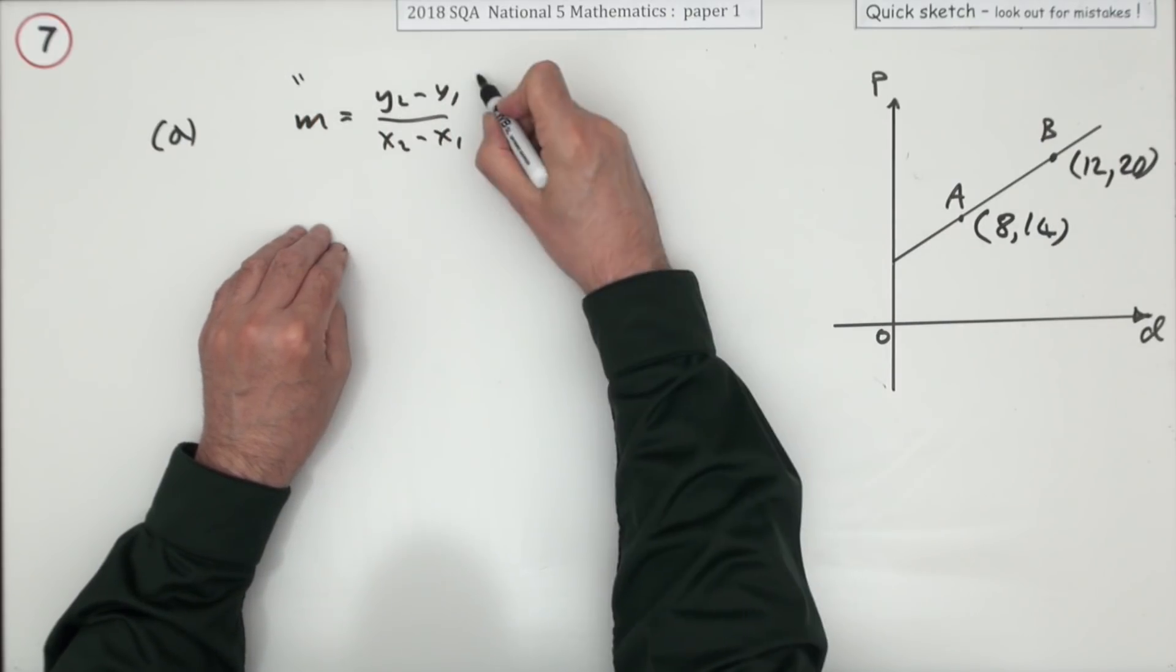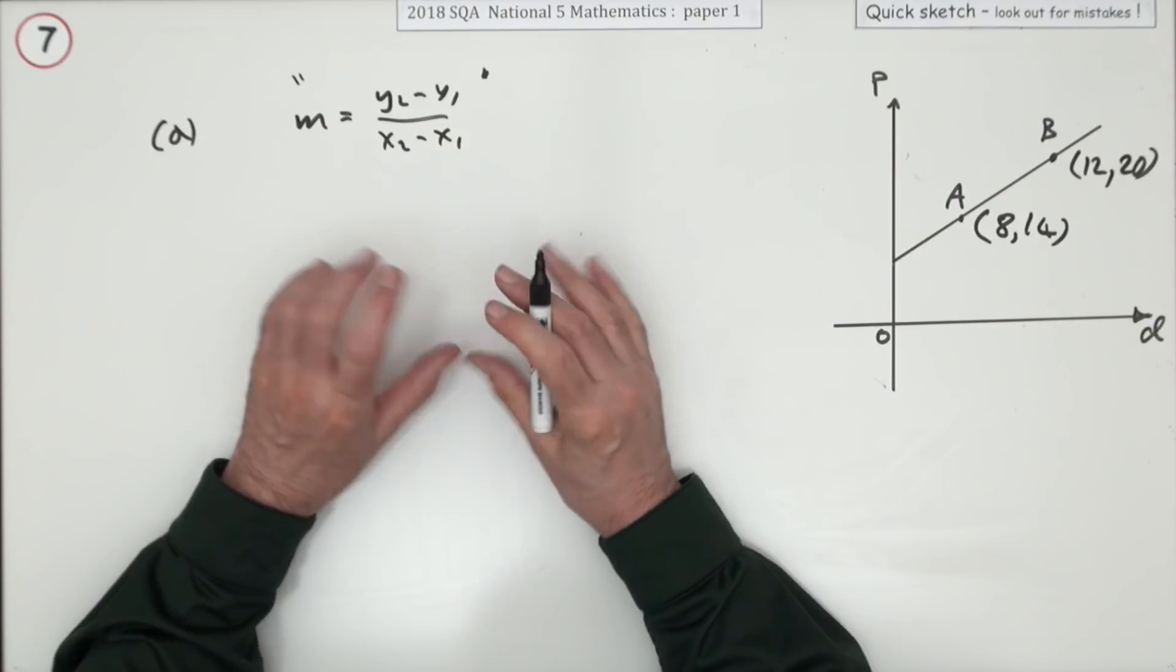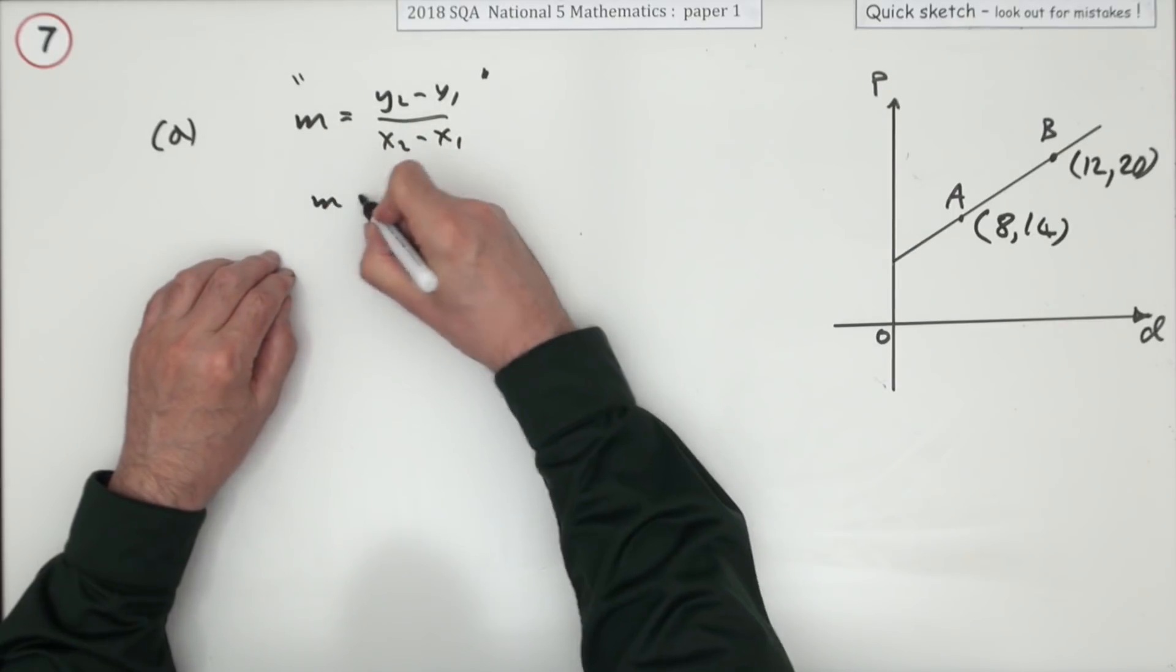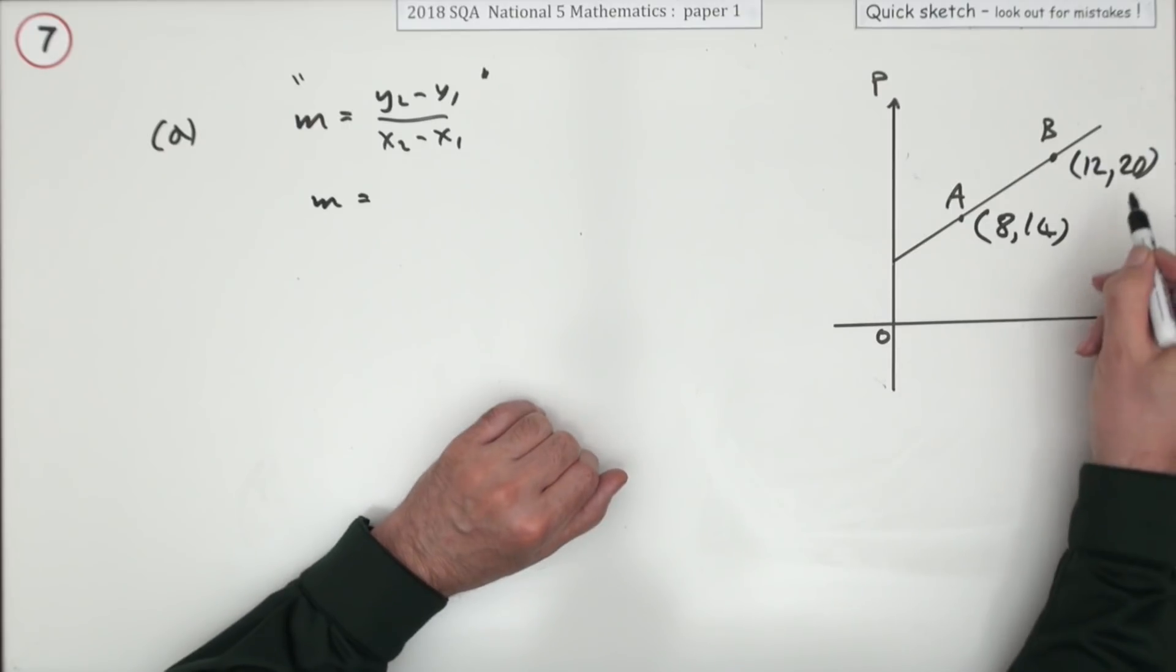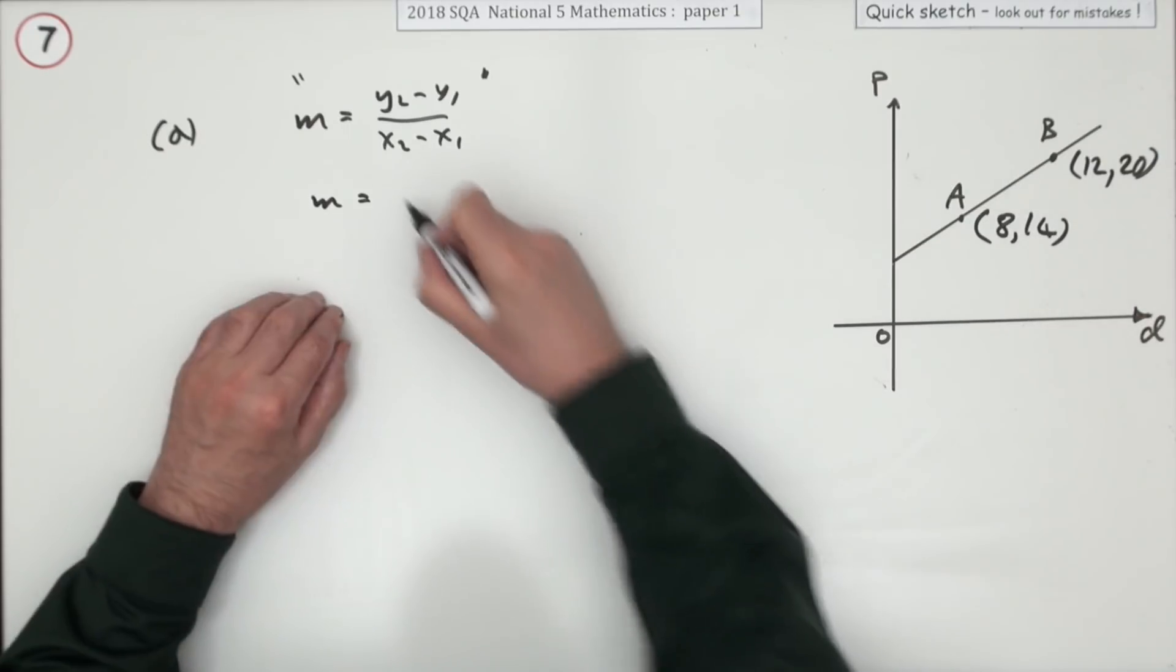Then usually when you write gradient, you do y2 minus y1 over x2 minus x1. So there's no y's and x's. I could still get away with that, but just be inverted commas around it to say that's the form I'm going to use. The gradient will now be the equivalent of the y coordinates, that would be the 20 take away the 14.